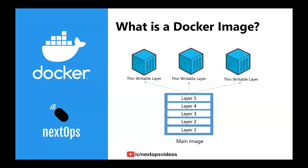We will learn about the Docker image layers. When you pull a main image, it downloads multiple layers. If you are running a container, Docker adds a writable layer on top of the image. The writable layer is stored in the container. When you restart the container, you will lose the data written in that writable layer.